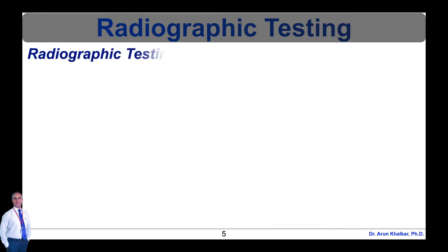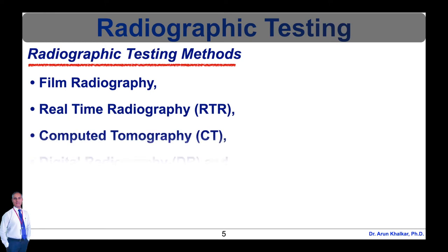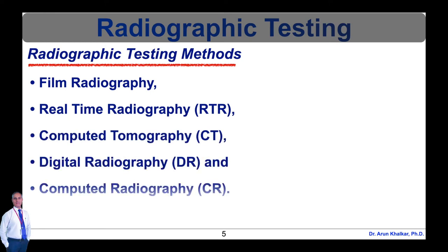In industrial radiography, there are several imaging methods available. Techniques to display the final image include film radiography, real-time radiography, computed tomography, digital radiography, and computed radiography.